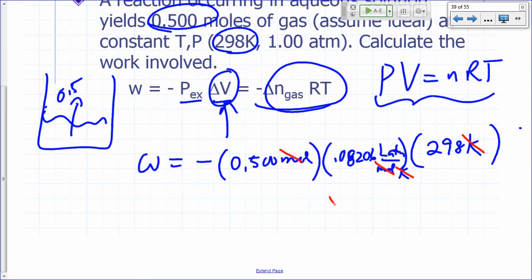But if you want your answer in joules, what would you have to do? So one liter atmosphere is 101.325 joules. So you multiply this by 101.325 joules for one liter atmosphere.